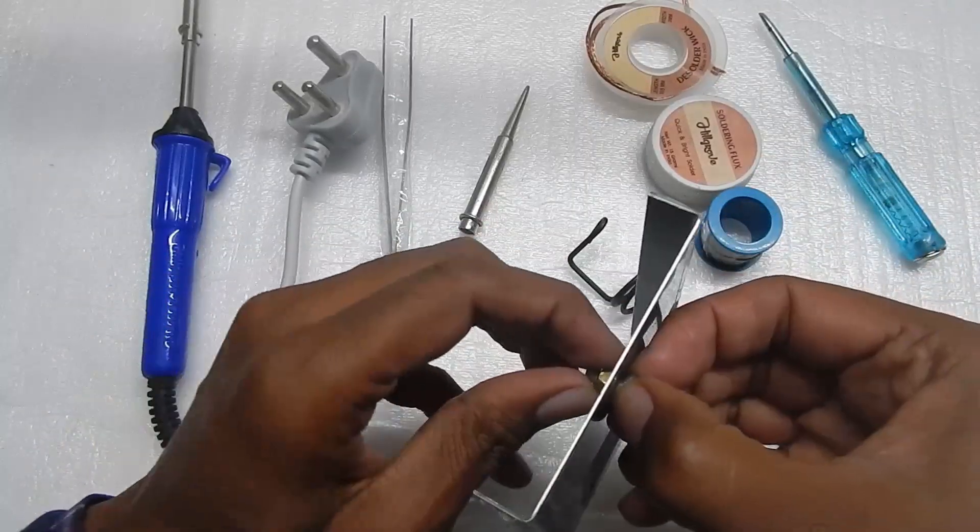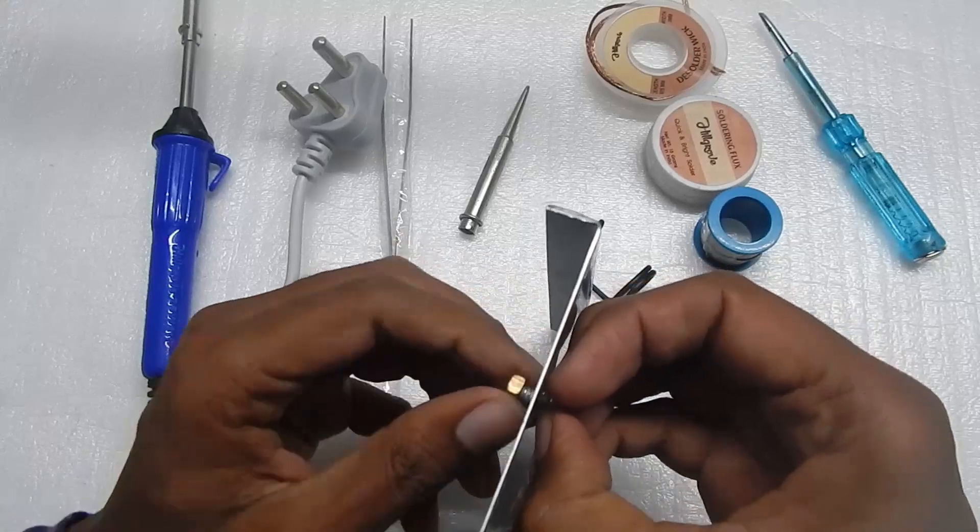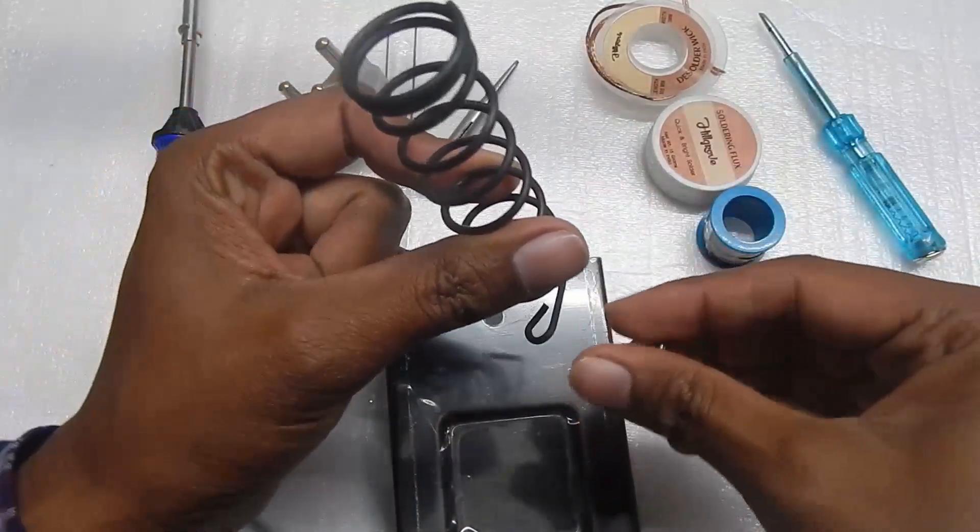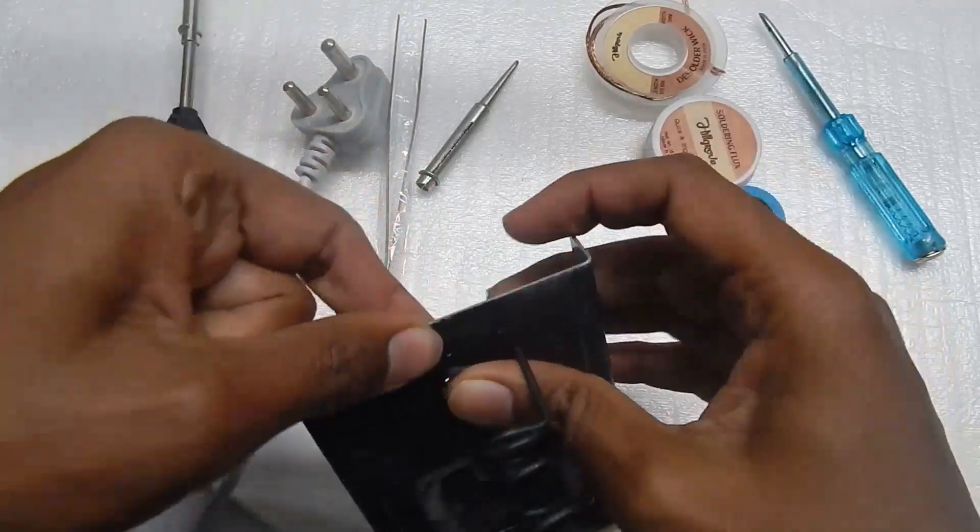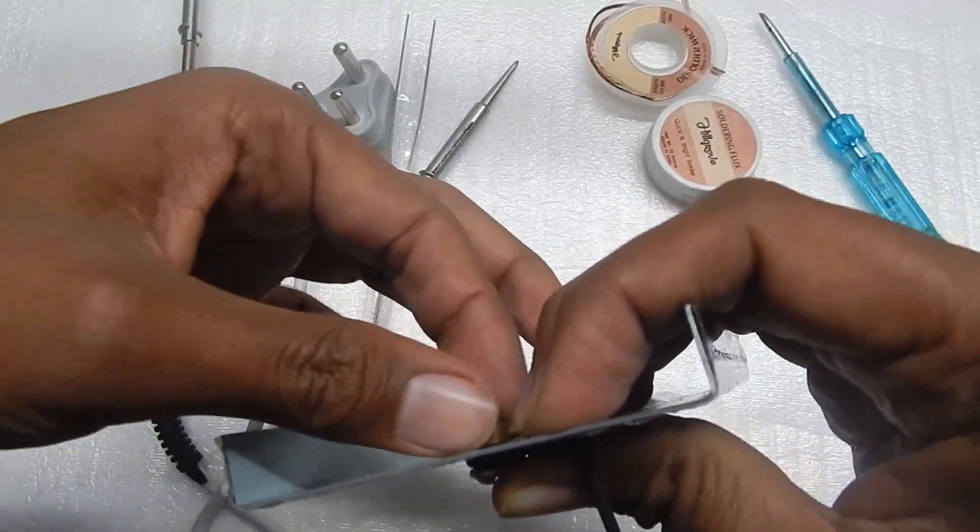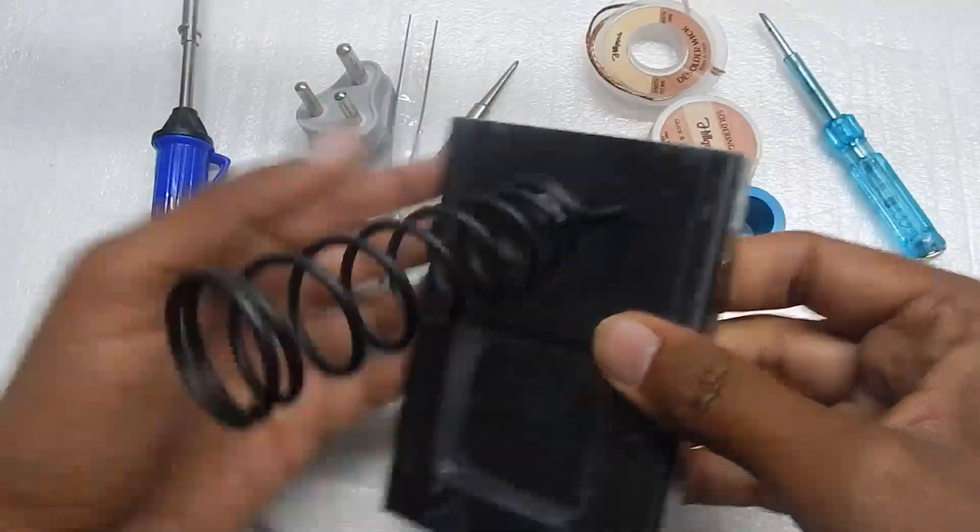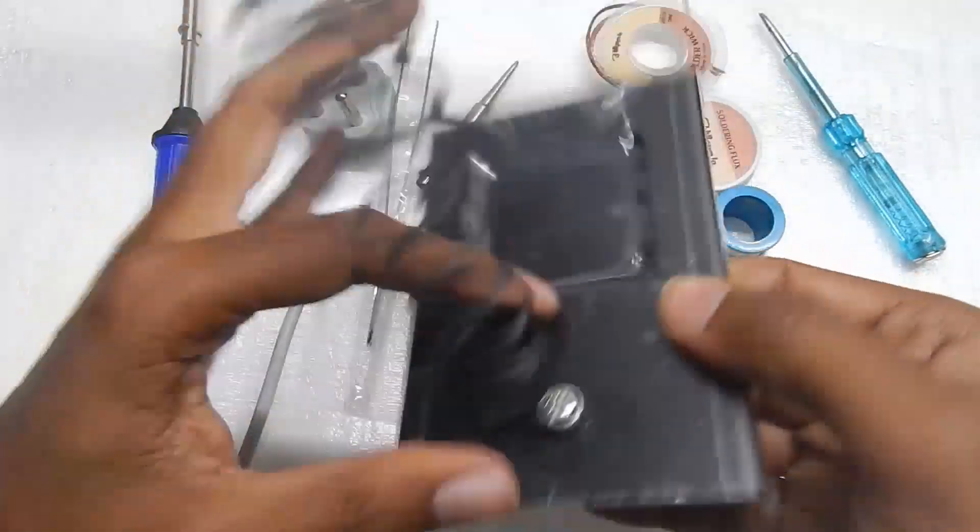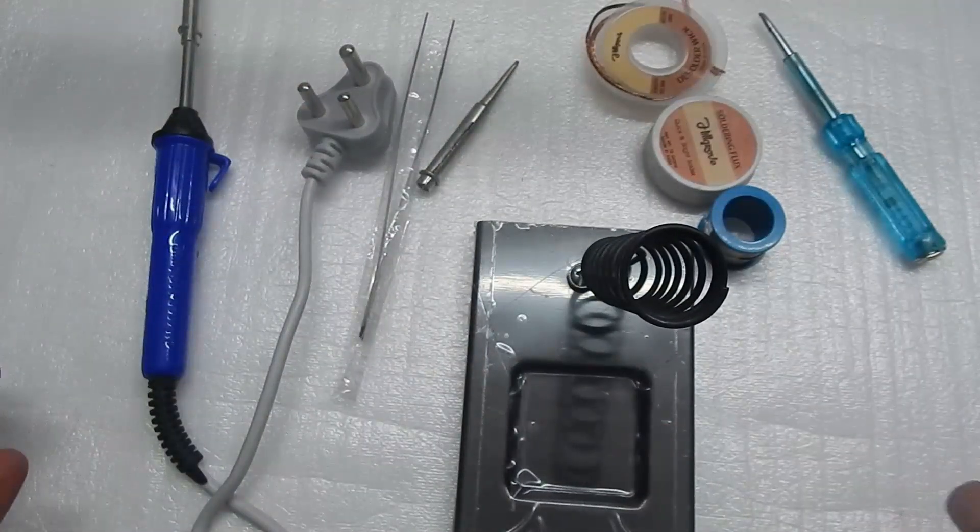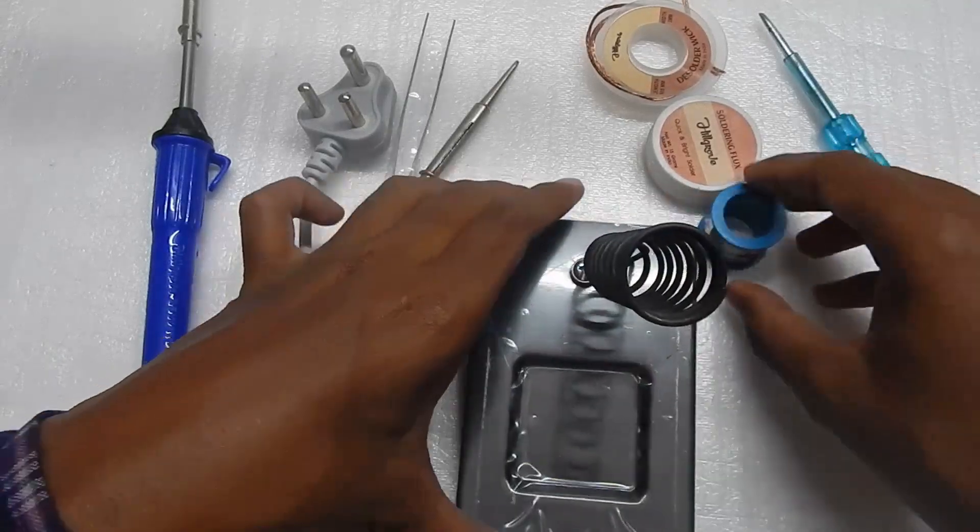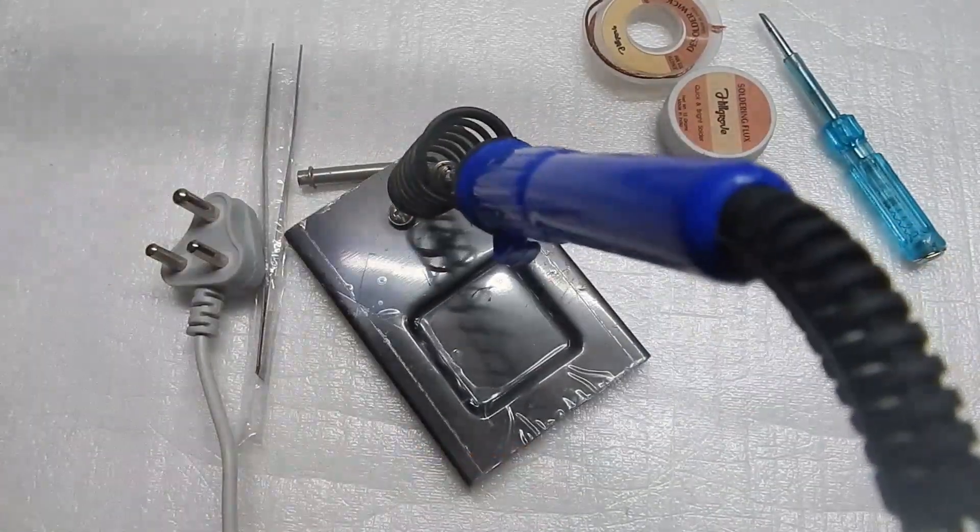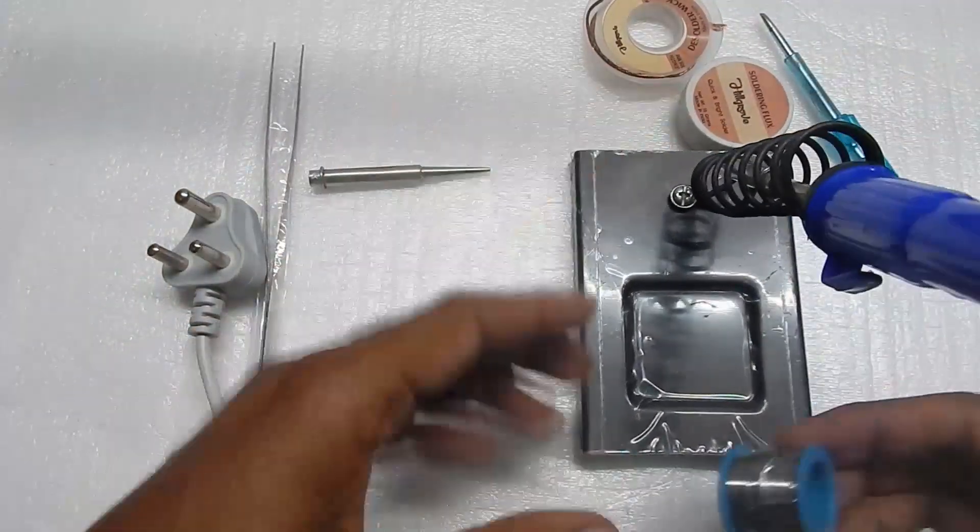If you're just starting out with soldering, a stand is a must in my opinion. I thought I wouldn't need one, but after a couple of projects I realized it's very important. I was using wooden blocks and cardboard boxes and burning them each time. This is the cheapest option for 250 rupees. It looks sturdy enough and now I don't have to worry about placing the soldering iron here and there.